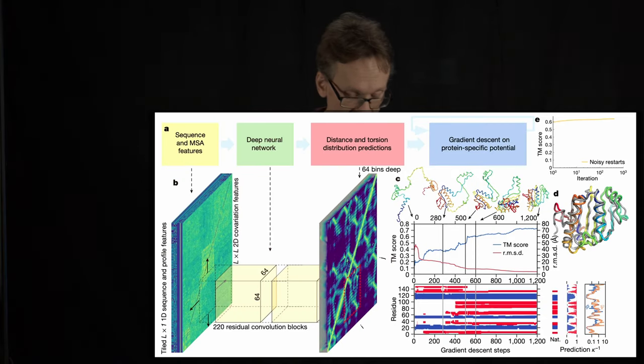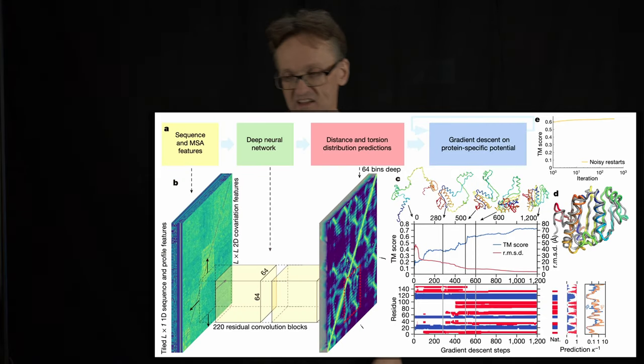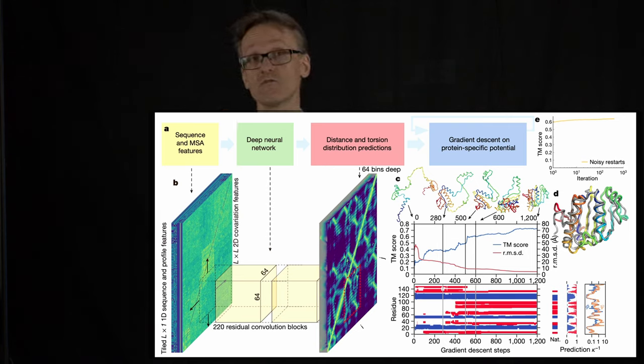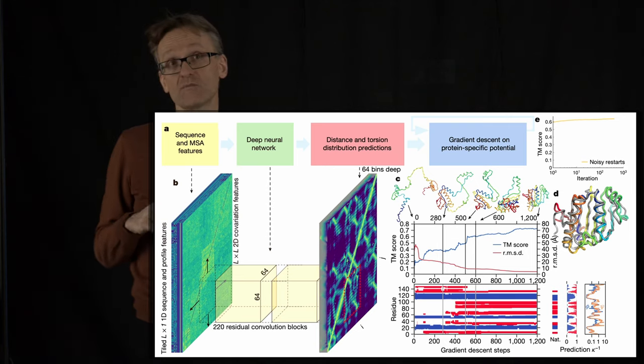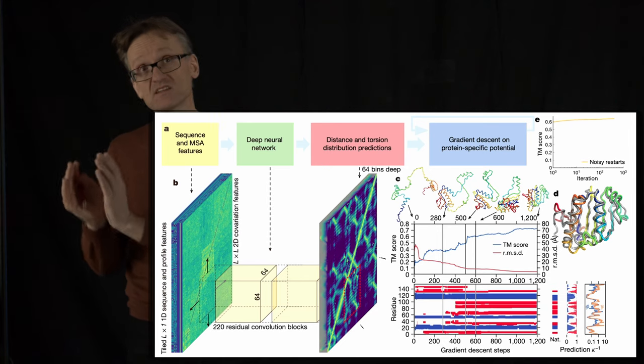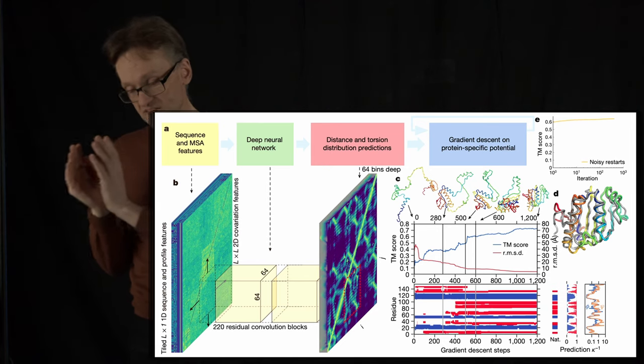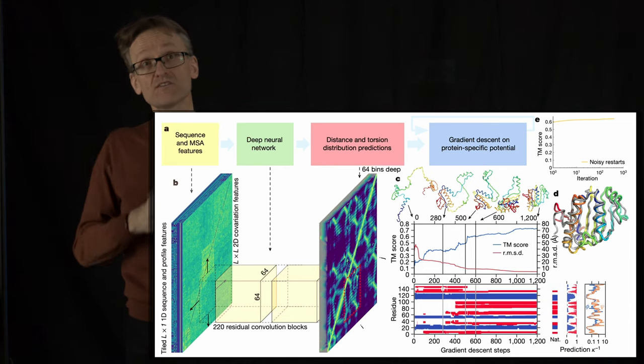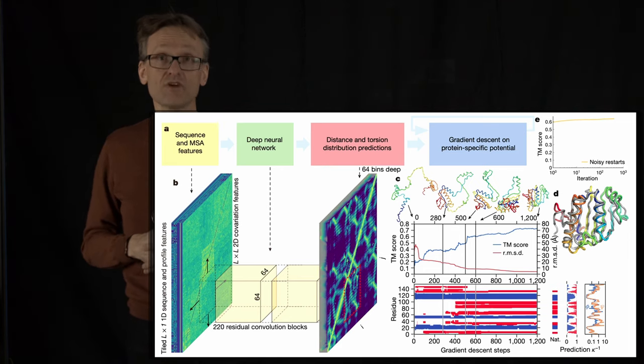This is not a class on deep learning so I won't have time to go through the details, but they largely used methods from image recognition, so-called convolutional neural networks that are based on identifying small pieces in an image, assuming they are translationally invariant, and then grouping this together to train the machine to recognize faces based on images with many faces.